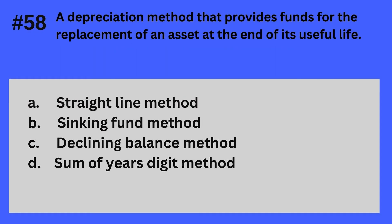Question 58. A depreciation method that provides funds for the replacement of an asset at the end of its useful life. A. Straight line method, B. Sinking fund method, C. Declining balance method, D. Sum of years digit method. The answer is B — Sinking fund method.